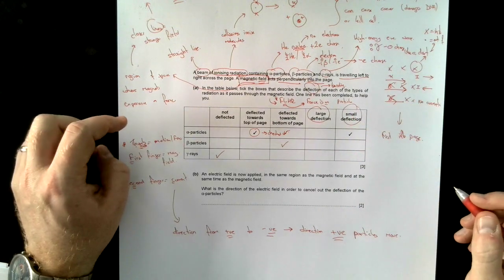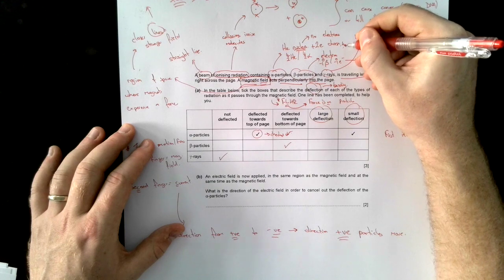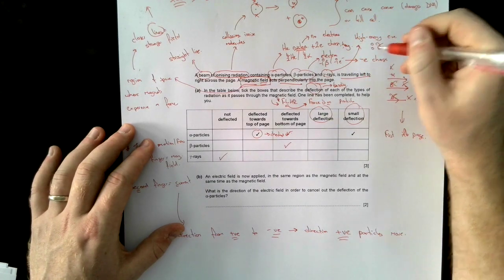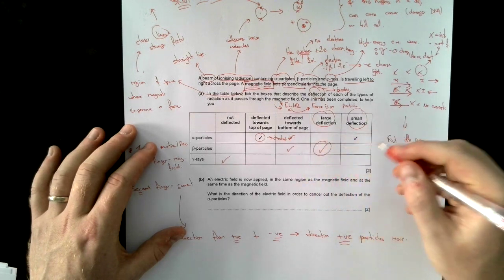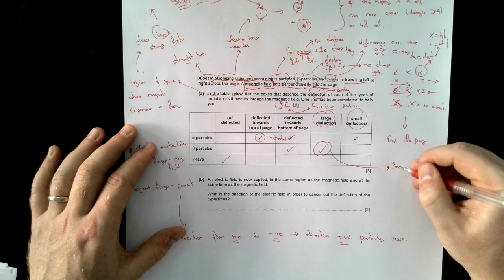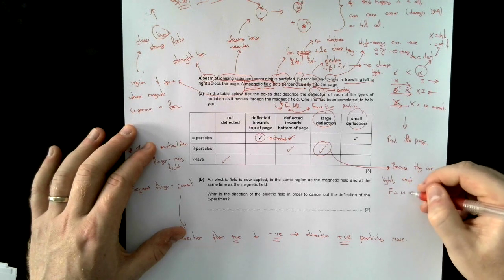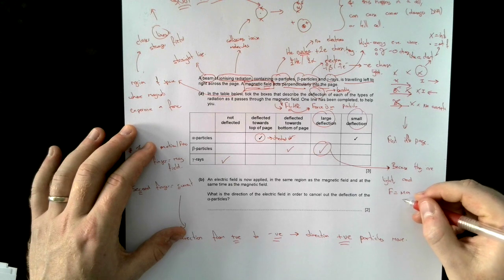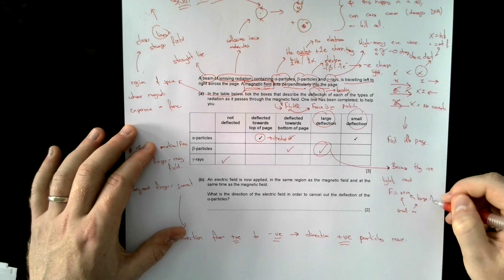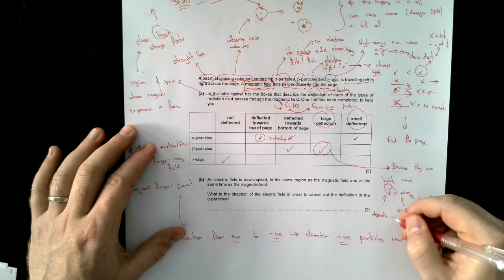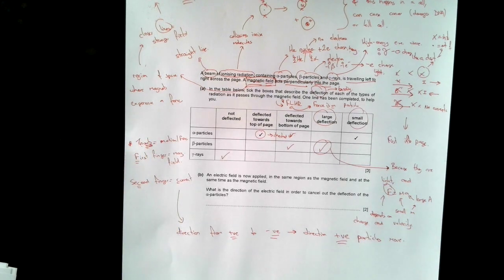Then it says large deflection or small deflection. So here's something else I could say. Alpha particles, they're a helium nucleus, they're a plus 2 charge, and they are heavy. Whereas electrons, they're a minus E charge, and they are light. So because of that, beta particles will have a large deflection. And I can explain that by saying because they are light, and F equals MA, I can say small m, therefore large A. I can say the force depends on charge and velocity of the particle.